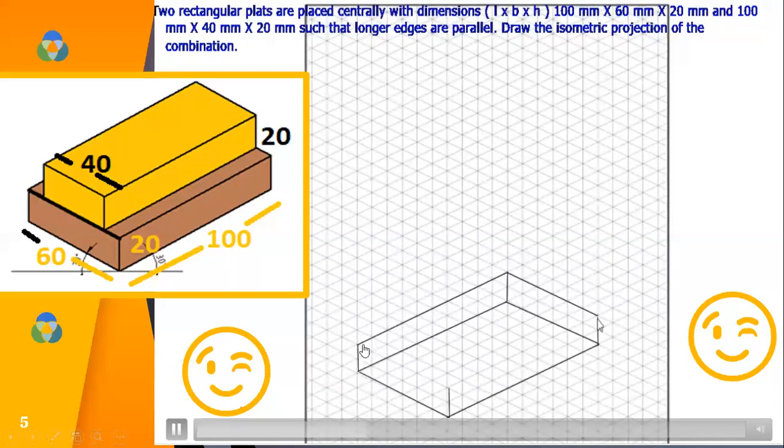So you have drawn 2 boxes, you have gone up from each of the corner and joined all the corners. So this completes one rectangular slab. So 100 by 60 and height is 20 mm.